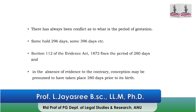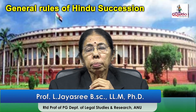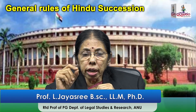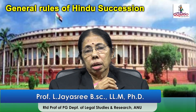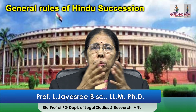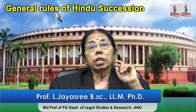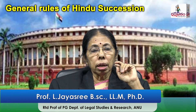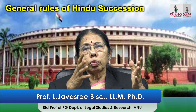In the absence of any evidence to the contrary, the conception shall be presumed to have taken place 280 days prior to the birth. This is a presumption — presumed to have taken place 280 days prior to birth. Now, one illustration to explain how the property will be distributed if the child is in the womb.